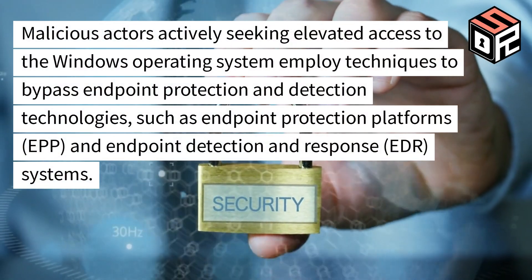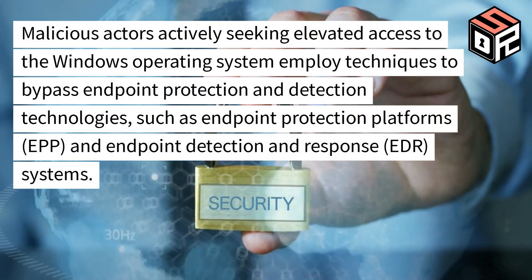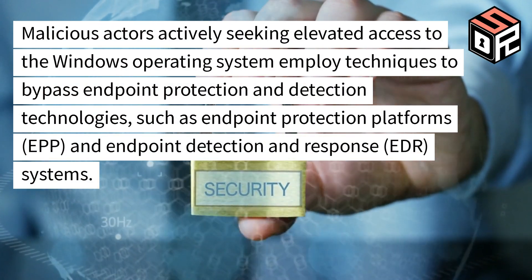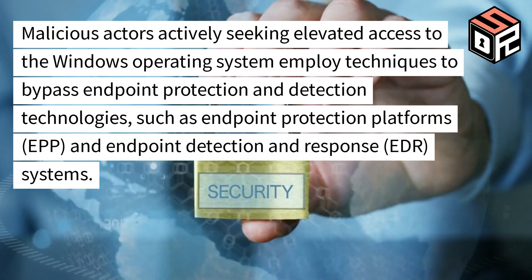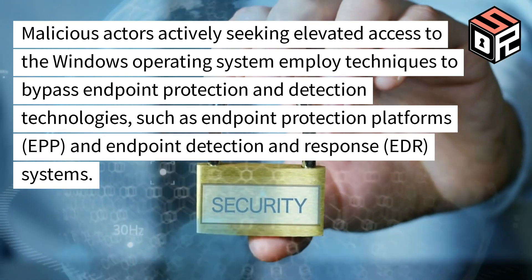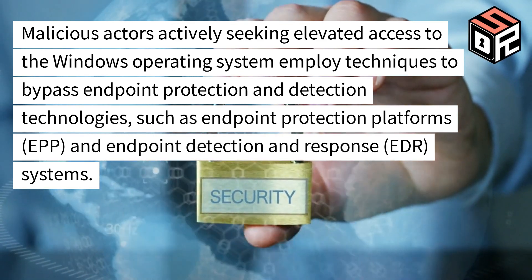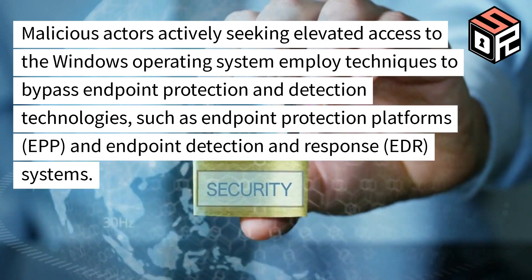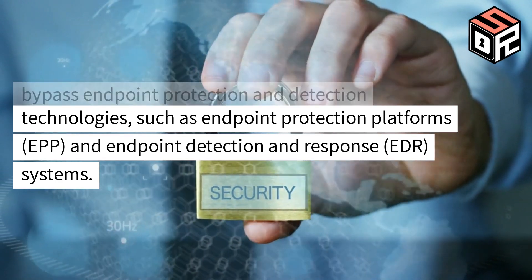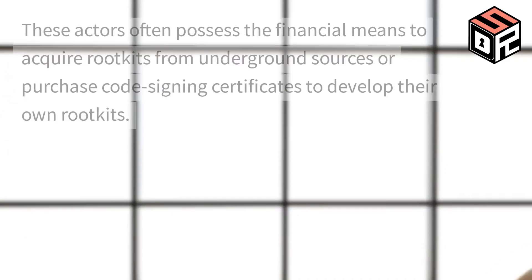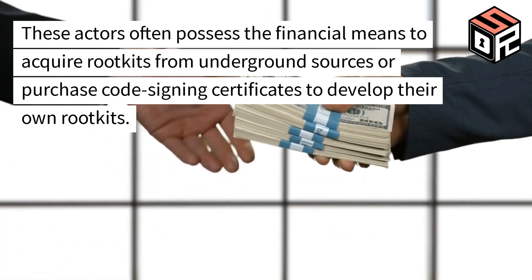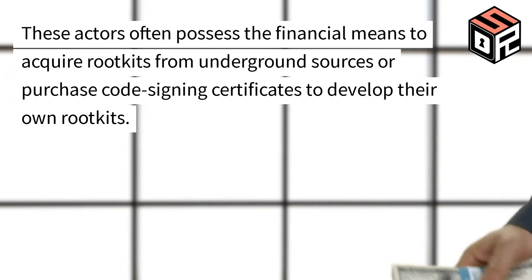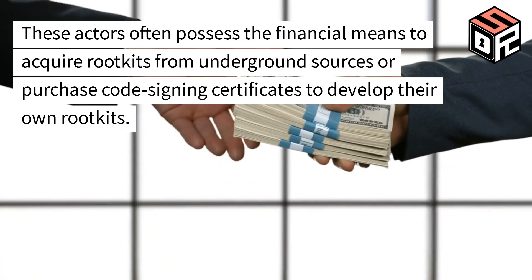Malicious actors actively seeking elevated access to the Windows operating system employ techniques to bypass endpoint protection and detection technologies, such as endpoint protection platforms (EPP) and endpoint detection and response (EDR) systems. These actors often possess the financial means to acquire rootkits from underground sources or purchase code signing certificates to develop their own rootkits.